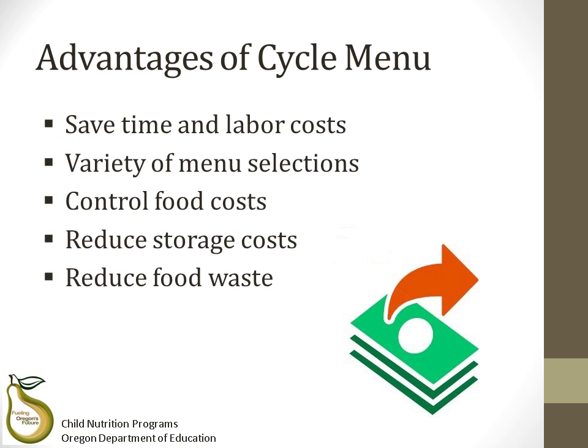Cycle menus help control food costs by allowing you to project the exact amount of food to be purchased, with help from previous production or menu records and other menu planning tools. Regularly used items can be purchased in bulk. They also help reduce storage costs by keeping stock at appropriate levels and allowing sponsors to look further forward to determine upcoming needs and related expenses. If storage is readily available, you can take advantage of USDA foods in a greater way. Cycle menus also help reduce food waste, since menus are prepared repeatedly, making it easier to project food quantities. Ordering can be tightened up and made more efficient as those doing the ordering understand what participants enjoy and what products need to be purchased in larger or smaller amounts.